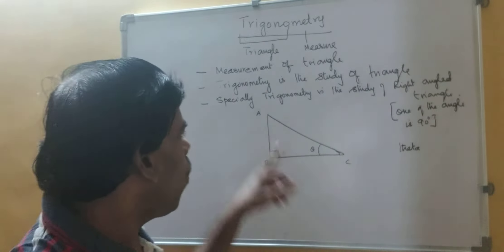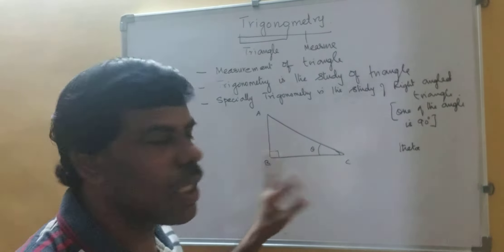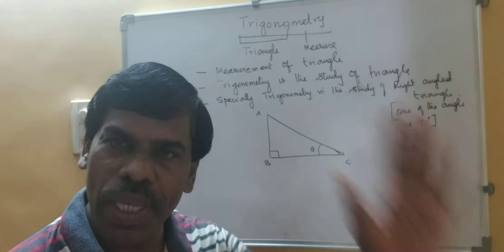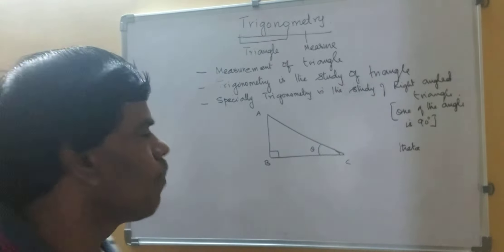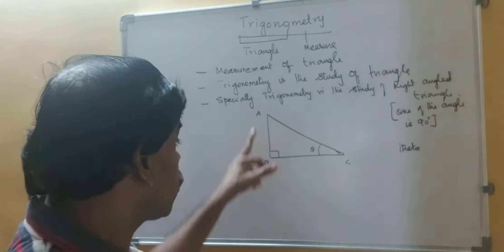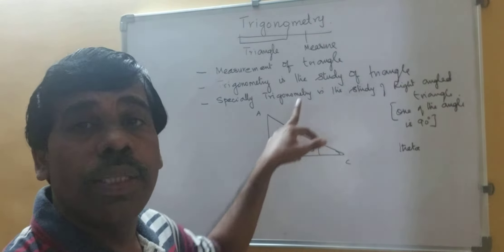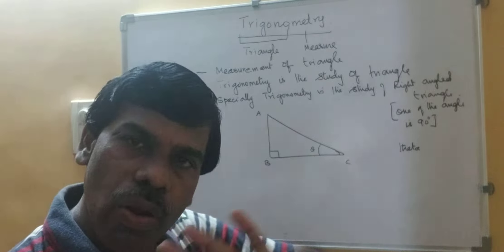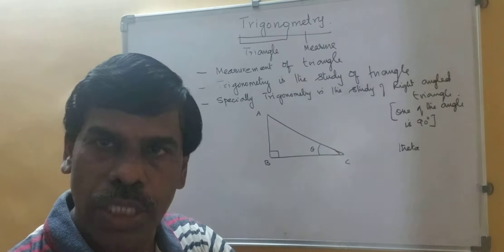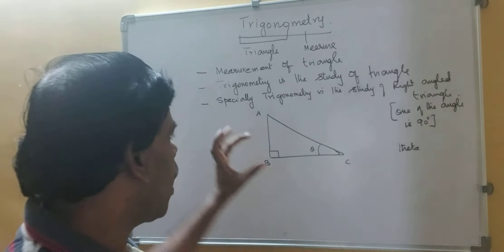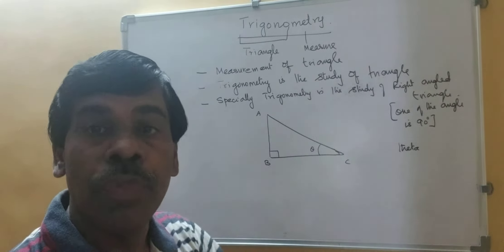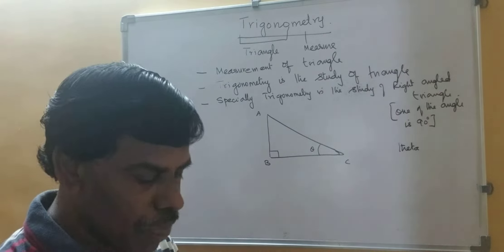Now, can all three sides of a right triangle be equal? No, it cannot be, because this side — the longest side — is always longer than the other two sides. So three sides cannot be equal in a right triangle, whereas two sides can be equal.